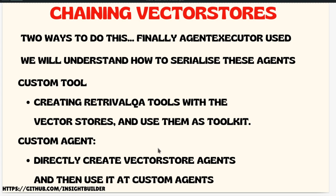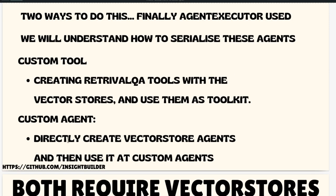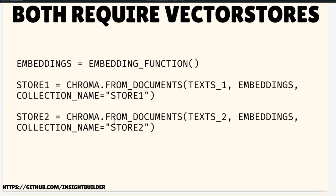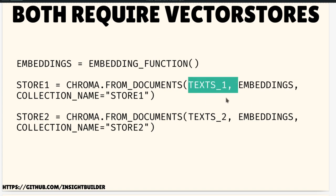Vector stores can be created as RetrievalQA tools — that is one way of creating custom tools — and those tools can then be used as a toolkit inside the agents. Another way is to create a VectorStore agent itself and use it as a custom agent. Both methods require the vector store from your side as documents. You need to have an embedding function such as OpenAI Embeddings, and your text available.